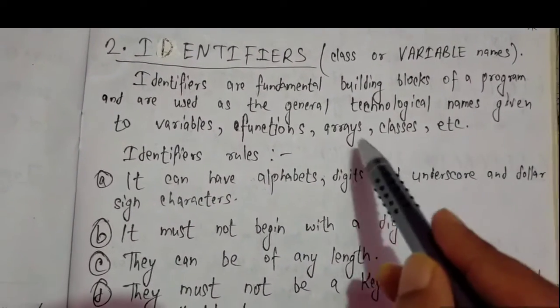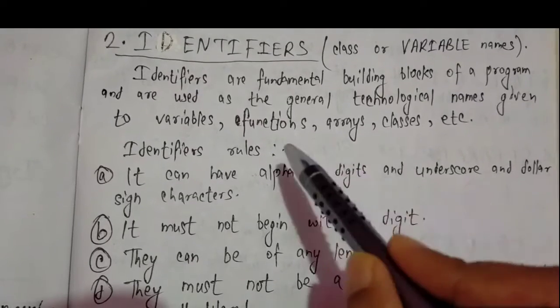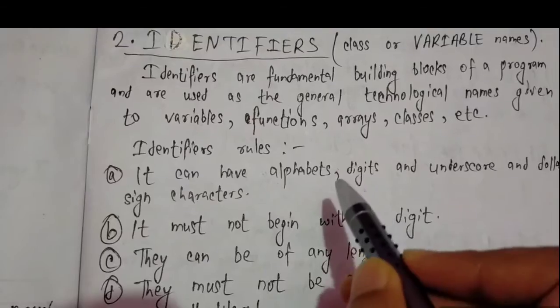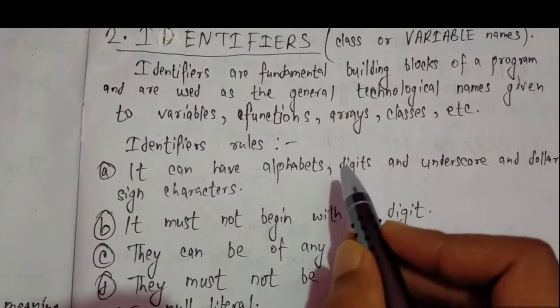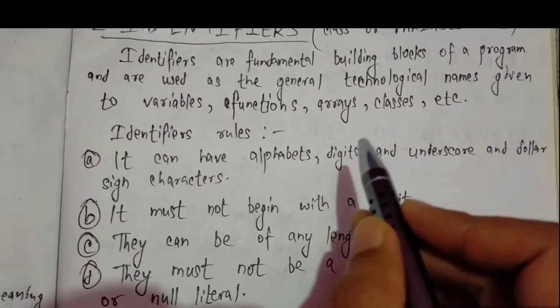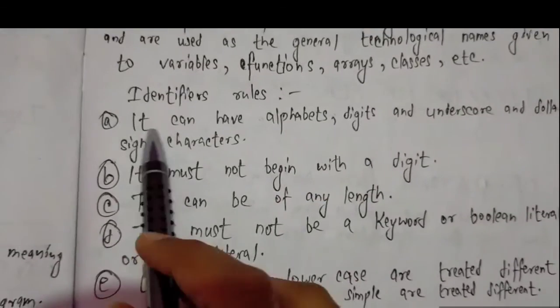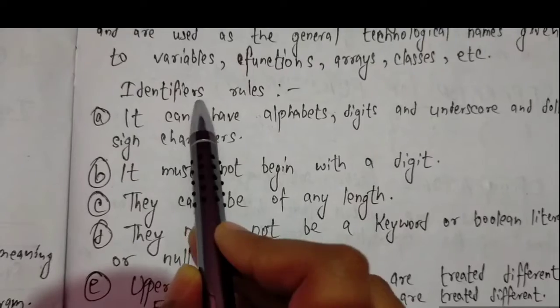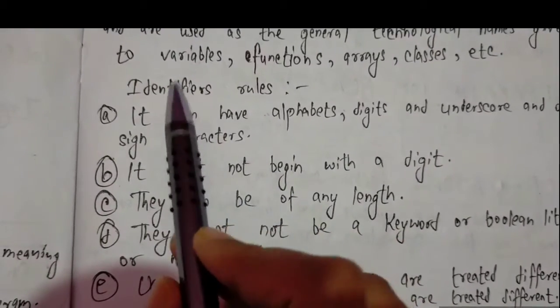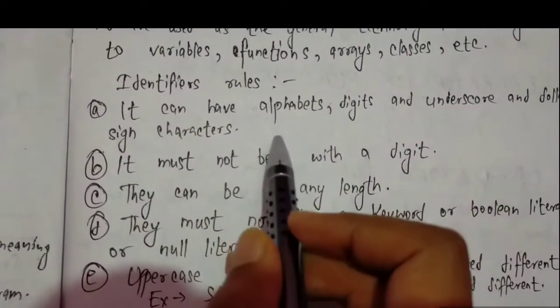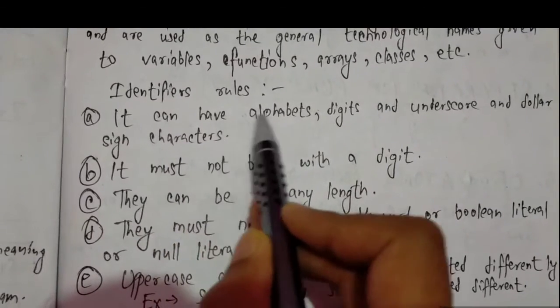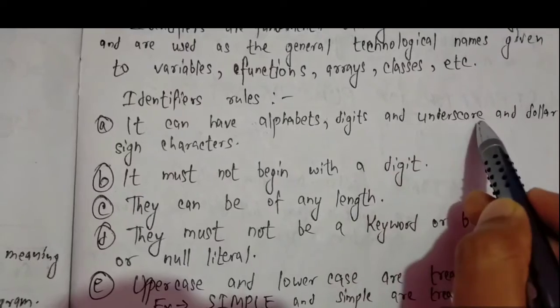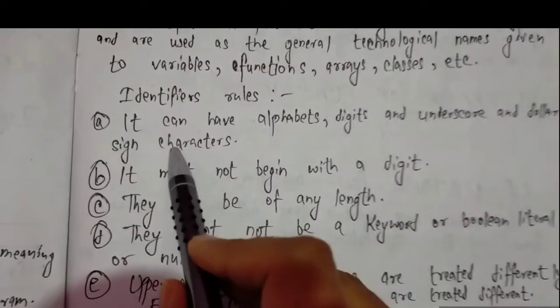It is a technical name. If we are storing the height of a person, we are taking the variable name as height. Now what are the rules for identifiers? It can have alphabets, digits, underscores, and dollar sign characters. It must not begin with a digit.